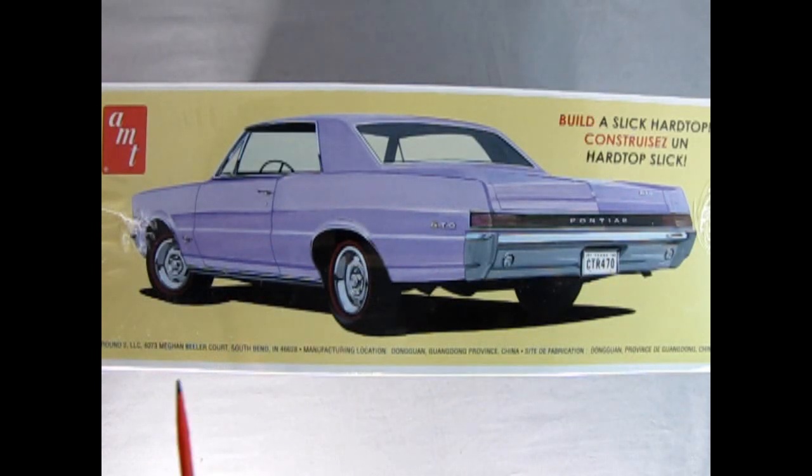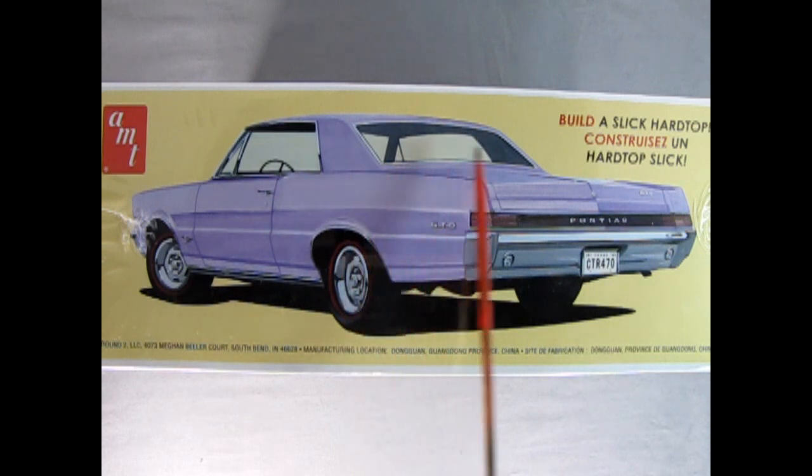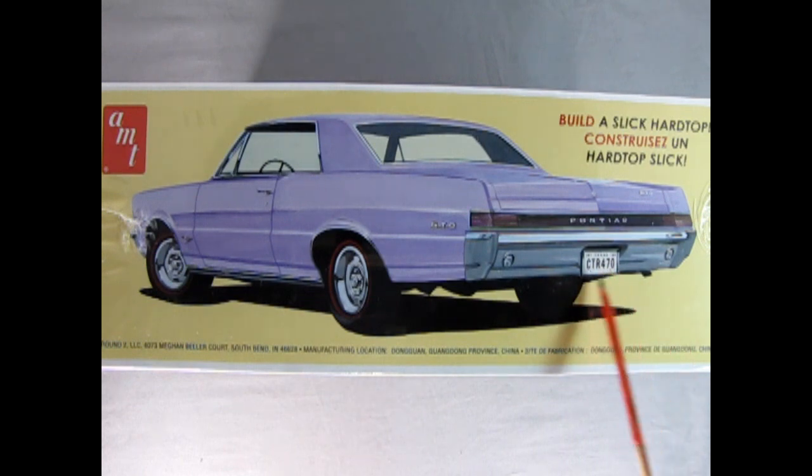Flipping the box up on this side we can see the rear three-quarters. This is built as a hardtop which you also get in this kit. It's painted or colored in a light kind of purple color, although my daughter does think it's pink. Here we've got a Texas license plate right on the back.